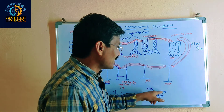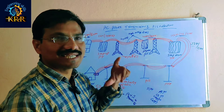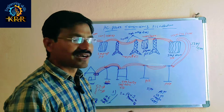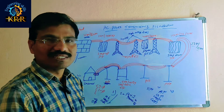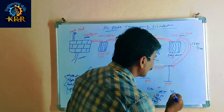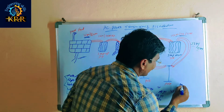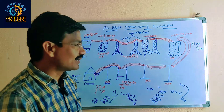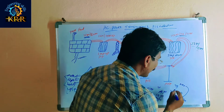Because the conductor cross-sectional area and weight are high, the overall cost increases. If the 11kV voltage comes directly to your village, the conductor size required is more, the weight is more, the cost is high. Also, voltage drop is high — if generating voltage is 11kV and 10kV reaches the village, 1kV drop has occurred.